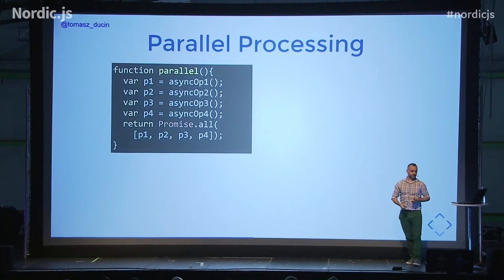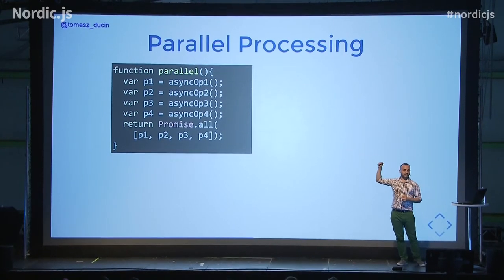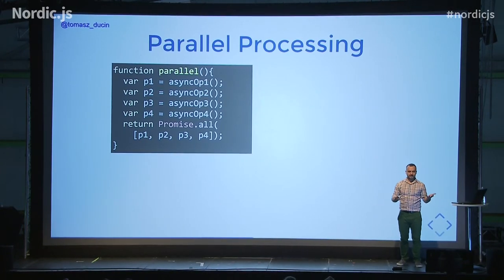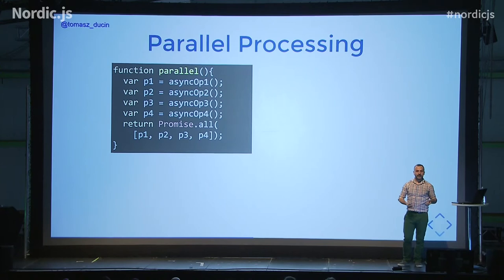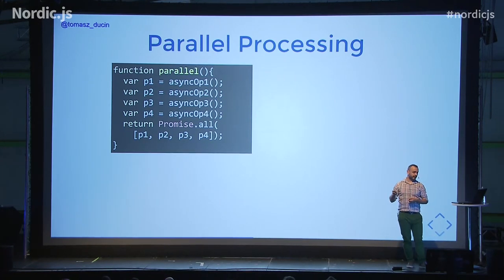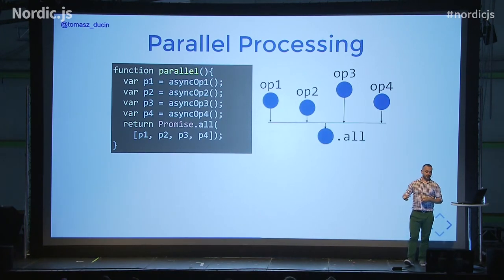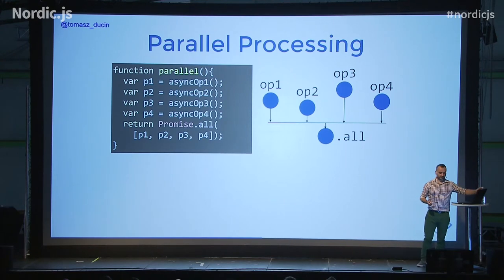The other approach is parallel processing. We create multiple promises but don't attach any then callback to them. The fact that we have multiple promises in our variables already means they're running in parallel. We can then use an aggregate like Promise.all. All promises will be running in parallel, and we can wrap it in a function to reuse elsewhere.